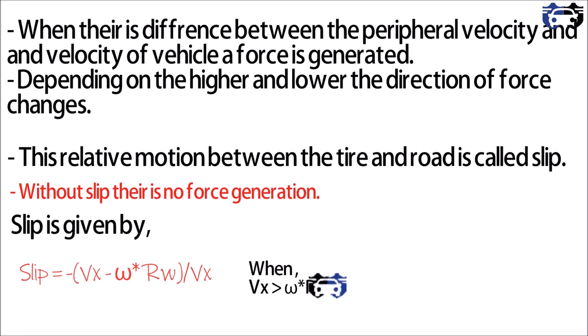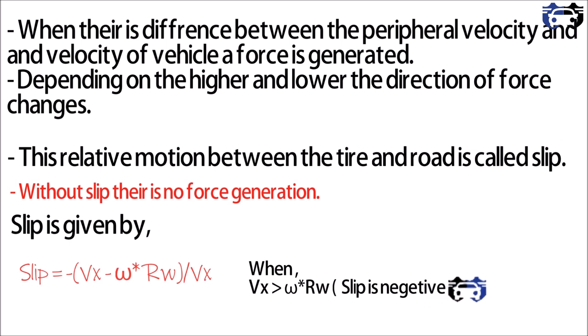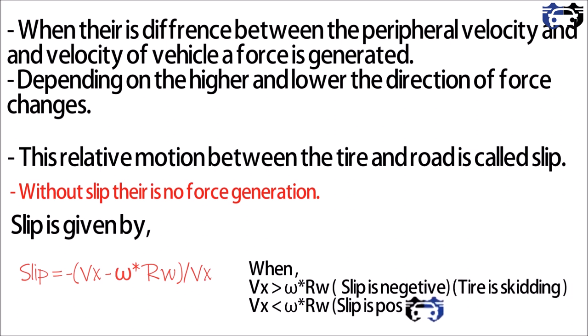When vx is greater than omega times rw, the slip is negative and the tires are skidding — the forward velocity exceeds the tangential velocity. When vx is less than omega times rw, the slip is positive and the tire is spinning.